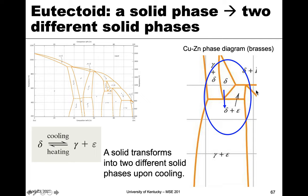Going back to the brass copper-zinc phase diagram, we can see an example of a eutectoid. We see that delta goes to gamma plus epsilon — solid goes to two other solids. So these are all different types of reactions that can occur with intermediate phases and general reactions that can occur in a binary system.